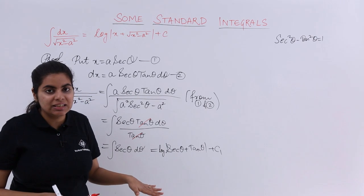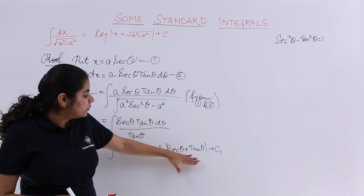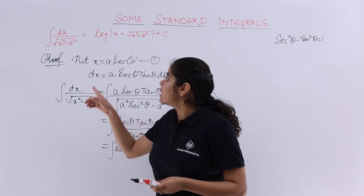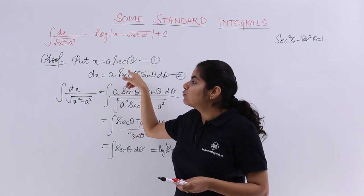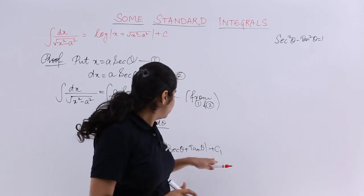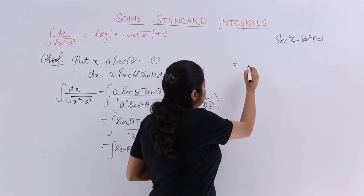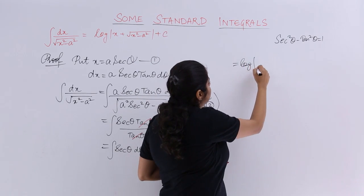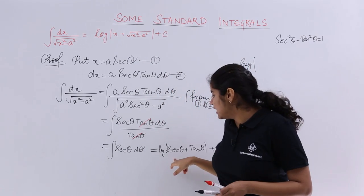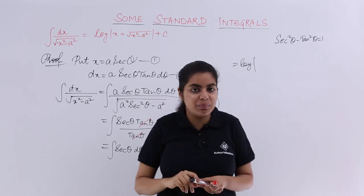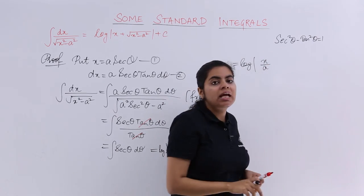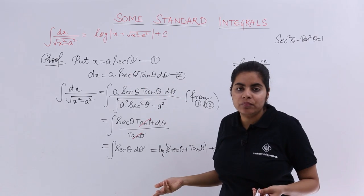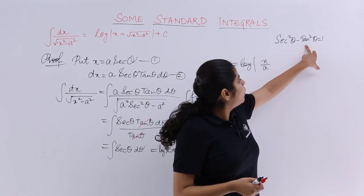So I hope things are clear till here. And next step is what? This theta has to be eliminated. So what I do is I use again this equation number 1 and I use what is the value of theta. Let's see. So the next step, let me do it here. Log is there, then mod. What is secant theta? Secant theta is nothing but x upon a. So I am writing here x upon a. Then what is tan theta? Tan theta I do not know, but I definitely know one thing.